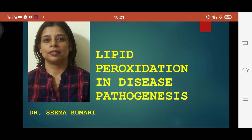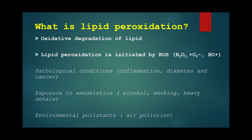Today we'll discuss lipid peroxidation in disease pathogenesis. Lipid peroxidation is the oxidative degradation of lipids. During metabolic processes, there is generation of reactive oxygen species such as hydrogen peroxide, superoxide anions, and hydroxyl radicals, which initiate lipid peroxidation.